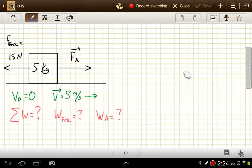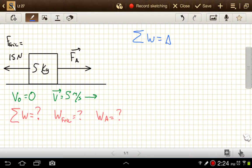To start out with, the net work we know has to equal the change in kinetic energy. So net work is going to be one-half m V squared minus one-half m V0 squared. That's just the final kinetic energy here minus the initial kinetic energy there.